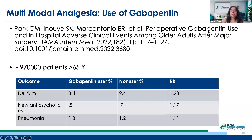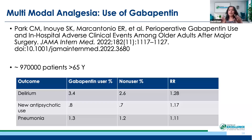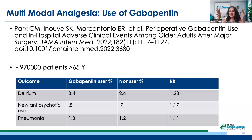Then there's multimodal analgesia. Patients are being discharged on Neurontin and muscle relaxants. Similar to opioid prescriptions, these should be tapered — seven days, 10 days, 15 days — for patients on post-surgical use of these medications.